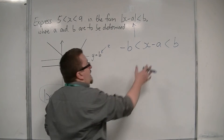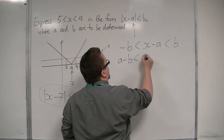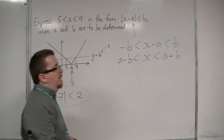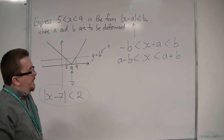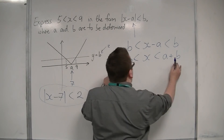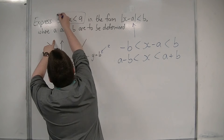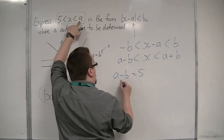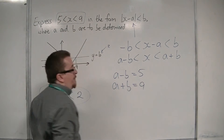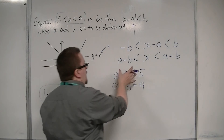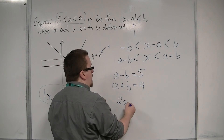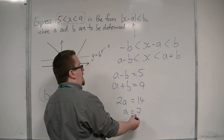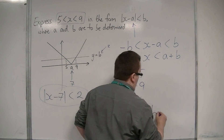We can then add a to both sides, which adds a to all three sections. Now we want to compare this with what we were originally given. So a - b must equal 5, and a + b must equal 9. This gives us a pair of very simple simultaneous equations. If you add them together, we get 2a — the b's cancel — equal to 14. So a is 7. Substituting that into one of the two equations, we get b is 2.